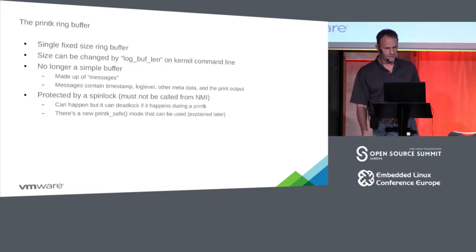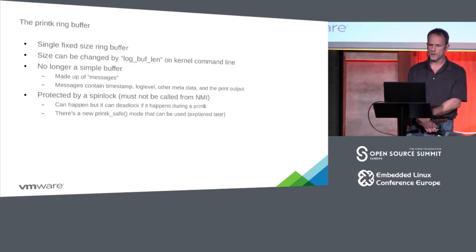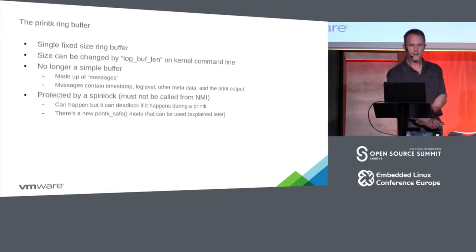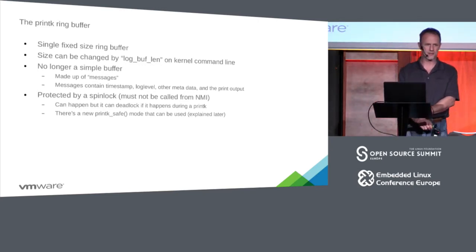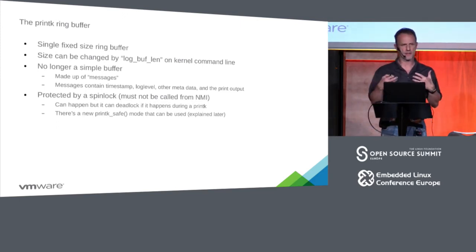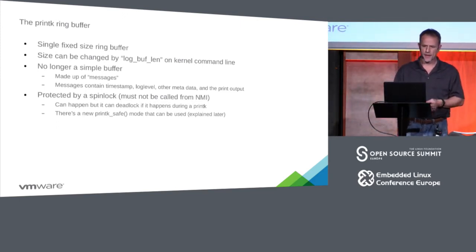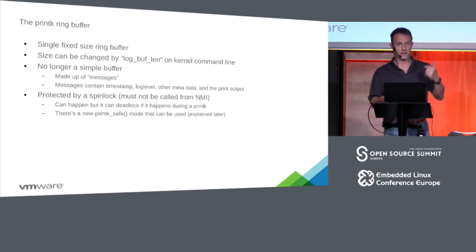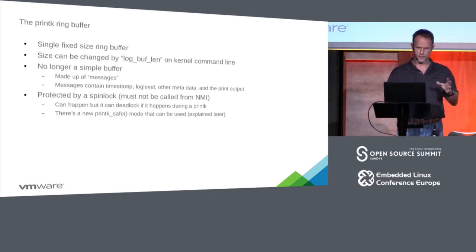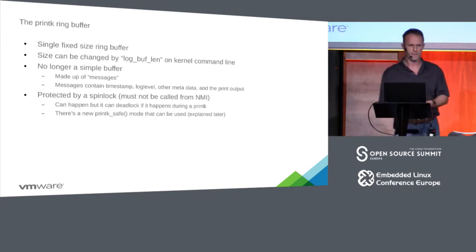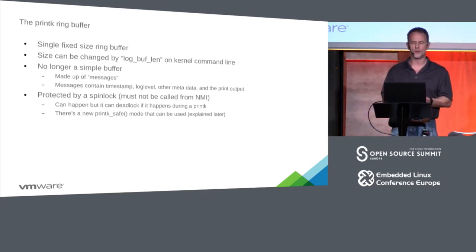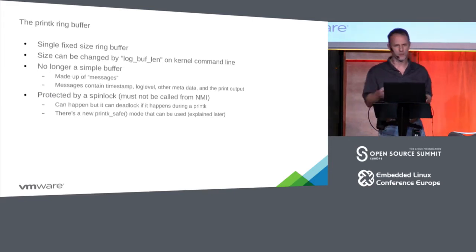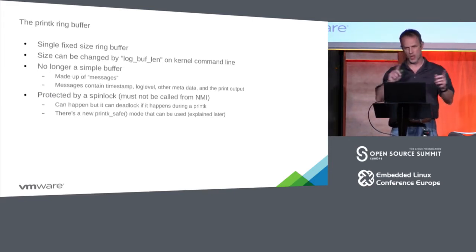The ring buffer in printk is a fixed size. You can change the size on boot with the kernel command line option log_buf_len. It's been changed since 1.0 from that simple ring buffer to a more complex format that passes binary messages. Now messages contain a timestamp, the log level is stored as a binary field, there's metadata you can attach, and then the data string. Today it's protected by spin locks, so you can't call it from an NMI — though we do have code coming up to address that.